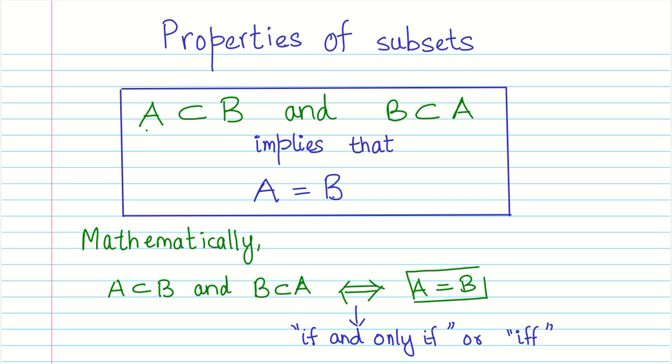And this is the sign with two-sided arrows with two lines, which kind of represents if and only if, or in short form you also use IFF. So this situation can be true only and only when two sets are equal. That is the only case when they will be the subsets of each other. This is quite an important property.